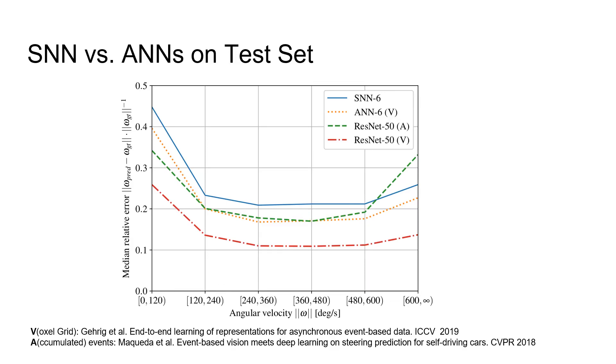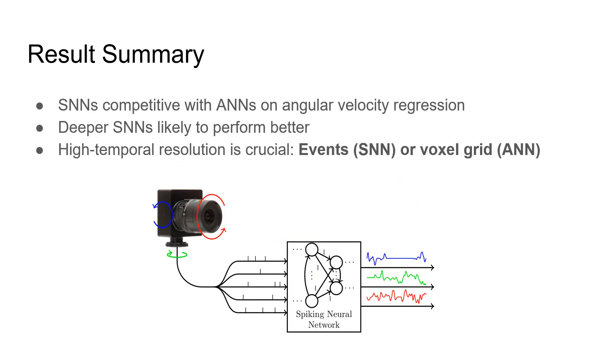We conclude that SNNs are competitive with ANNs on angular velocity regression from events, and that deeper SNNs are also likely to perform better. However, this is challenging to achieve on conventional hardware. Furthermore, the accurate timings of events prove to be crucial for best performance.